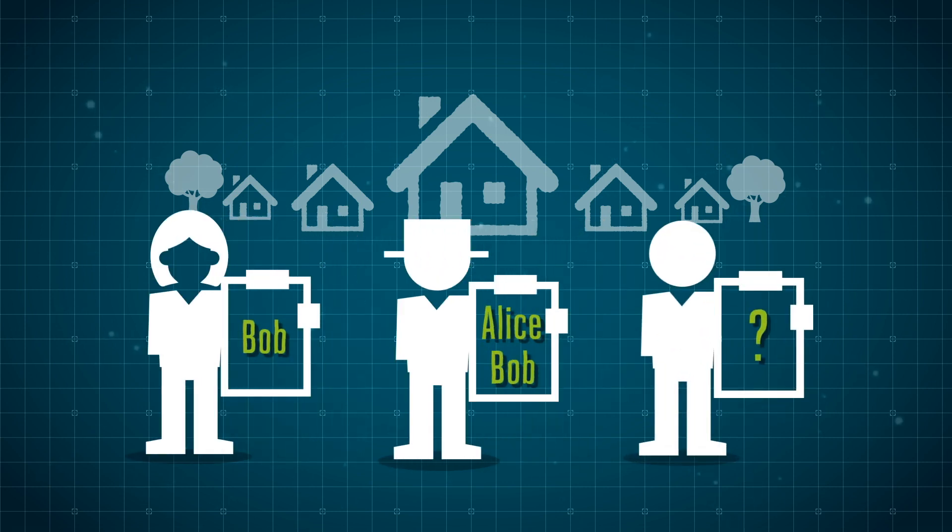Then walks in Ken. Ken needs to have a list of everyone who has themselves on their own list. Go ahead and pause the video here and try to figure out who's on Ken's list.